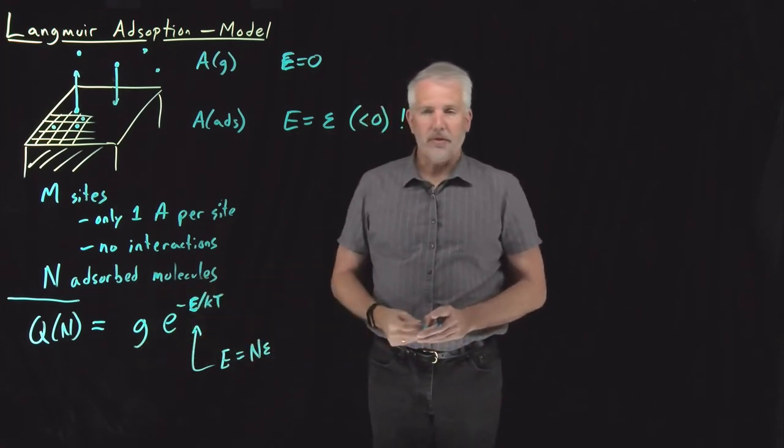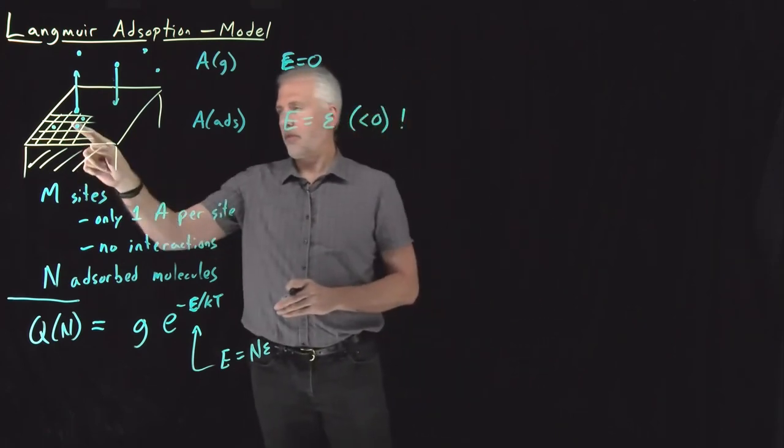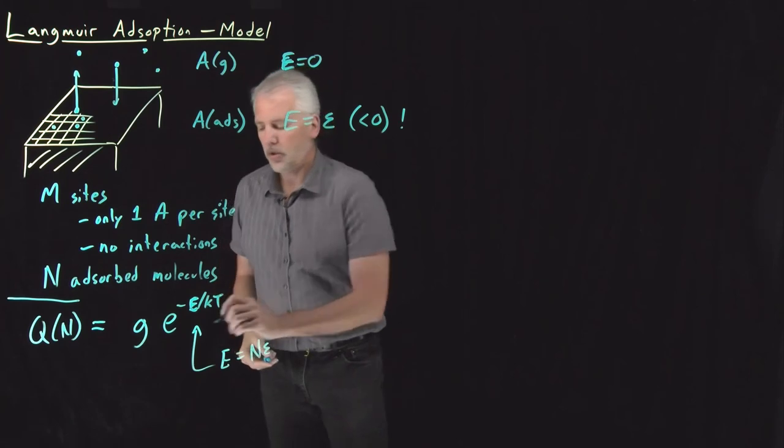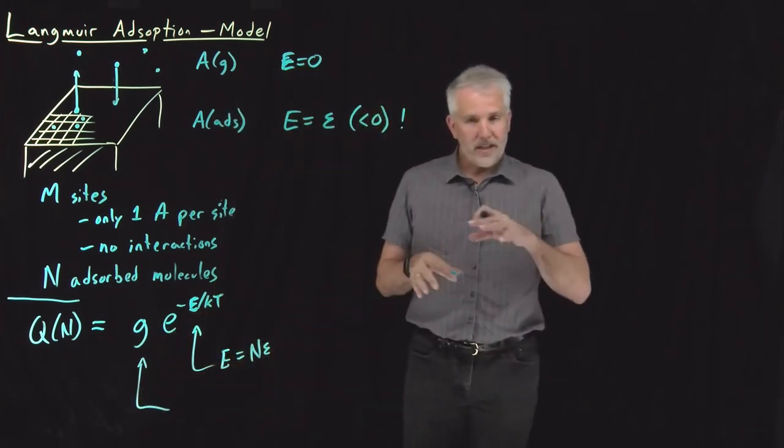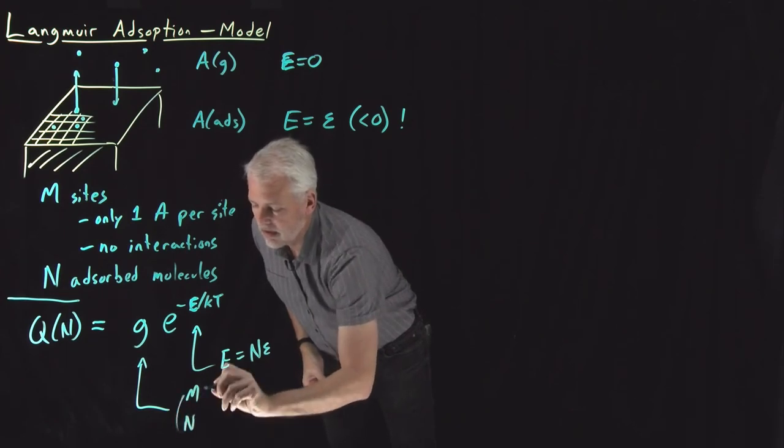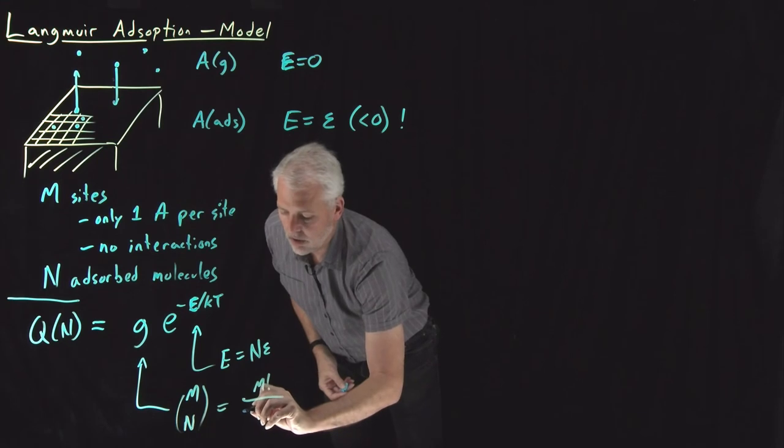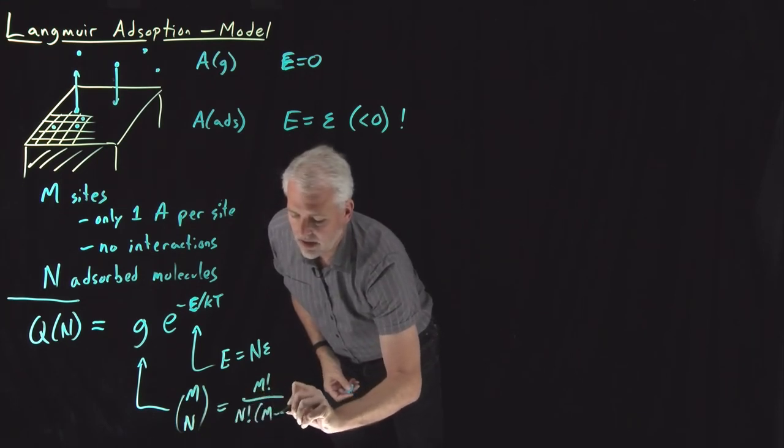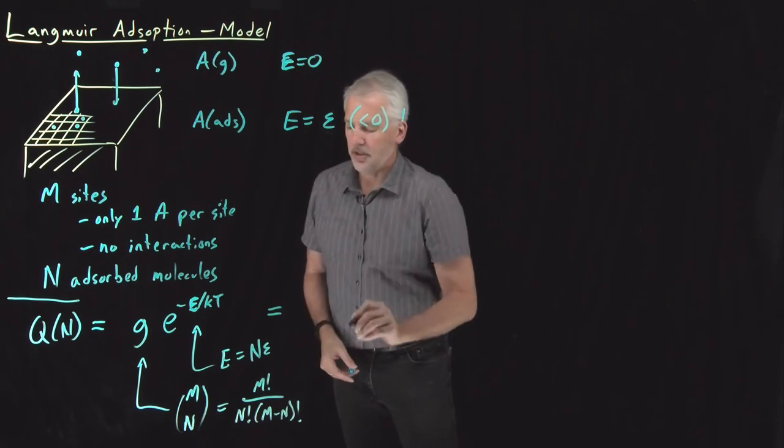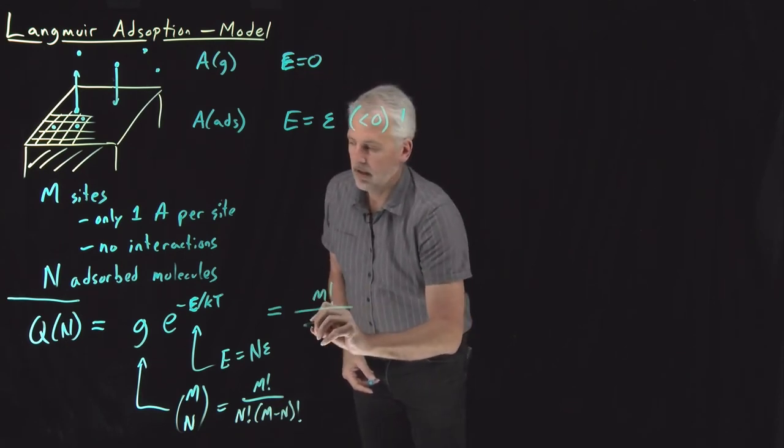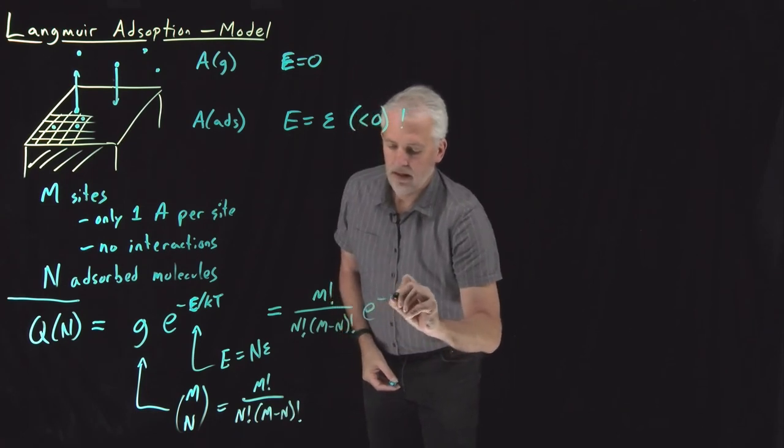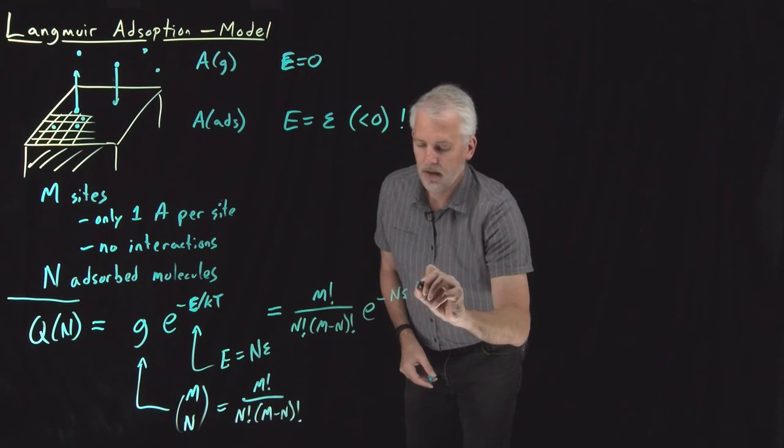But I have some degeneracy. I have a number of different ways I could have placed those N molecules onto the surface. The four molecules I've drawn on the surface, I could have put them here, here, here, and here, or I could have put them in four other sites or four other sites. The total number of ways I can put N molecules into M sites, is M choose N, which is M factorial over N factorial, M minus N factorial. So combining those two pieces of information, I can write my partition function as these factorials, M factorial over N factorial, M minus N factorial, E to the minus N times epsilon over KT.